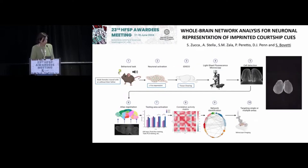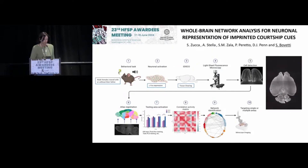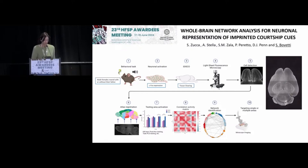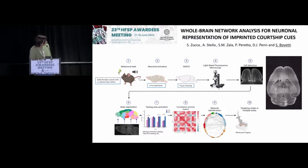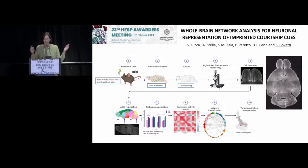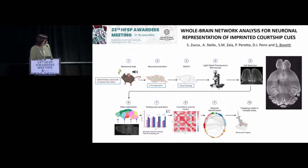Although imprinting has been known for many years, we still don't know which are the neural basis of imprinting. To understand which brain areas are involved, we decided to use a whole-brain approach. Adult female mice that have been imprinted on different sensory cues are then re-exposed to those sensory cues when they are adult.